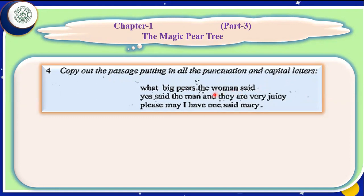Come to the next line: 'Yes, said the man.' Again, 'Yes' is said by the man, so it will come in inverted commas. After 'yes', comma. The man said more: 'and they are very juicy' — this will also come in inverted commas. After 'yes', comma, and at the end, full stop.